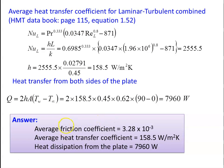Answers: average friction coefficient = 3.28 × 10⁻³, average heat transfer coefficient = 158.5 W/m²·K, heat dissipation from both sides = 7960 W.